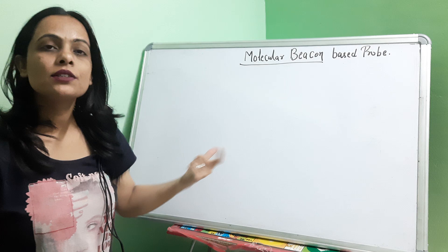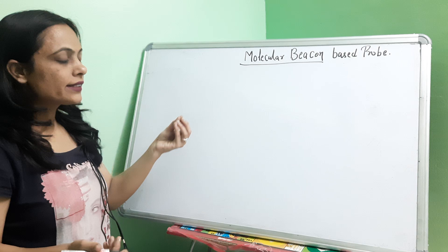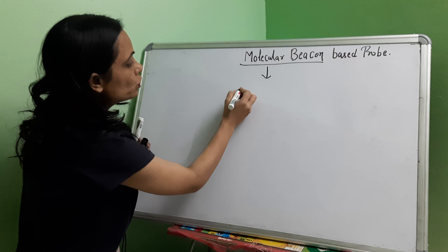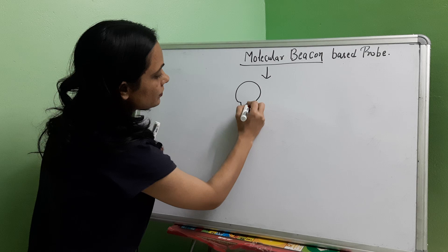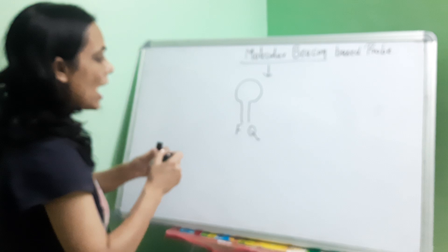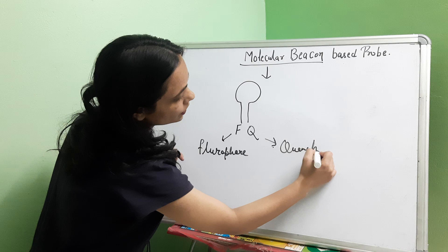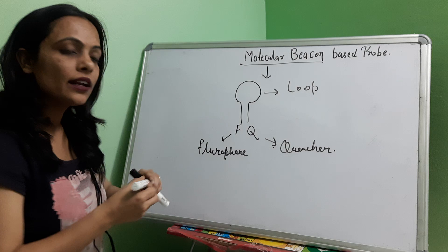The molecular beacon is a fluorescence-producing probe. When we amplify our target DNA, the molecular beacon gives fluorescence. Let's discuss the structure of it. In the molecular beacon, there is a loop and a stem. This is the stem part and this is the loop part. On one side there is a fluorophore, and on the other side there is a quencher.